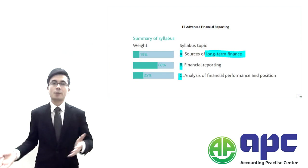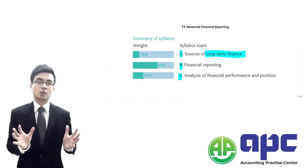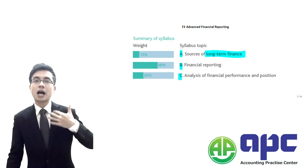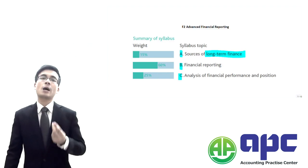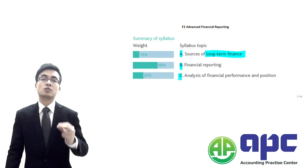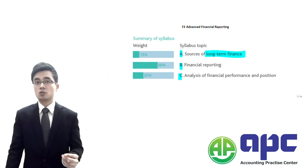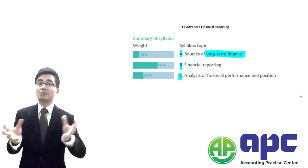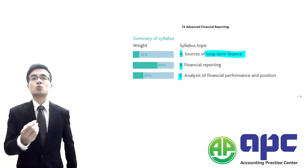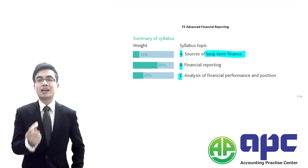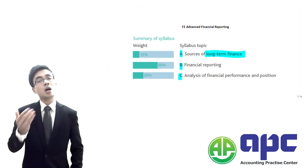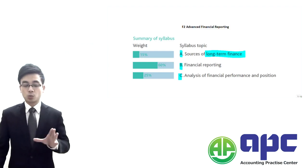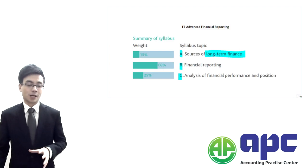After we've got this money, we can make our investment. But Section A not only requires you to know how to issue long-term finance, but also you're required to calculate the costs associated with them. We're going to summarise it all together, and this will give us the Weighted Average Cost of Capital — WACC. That's what Section A is testing.